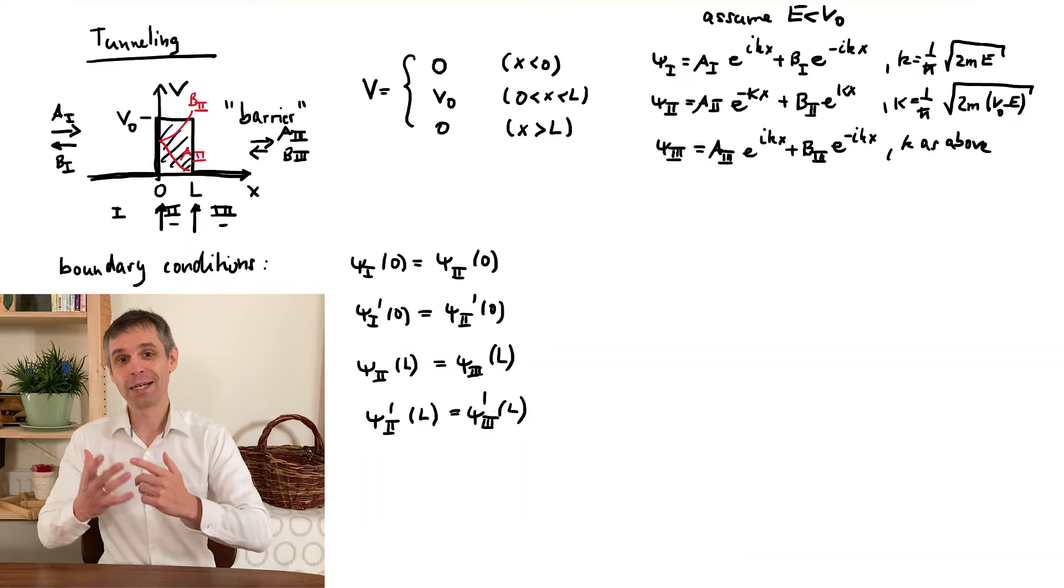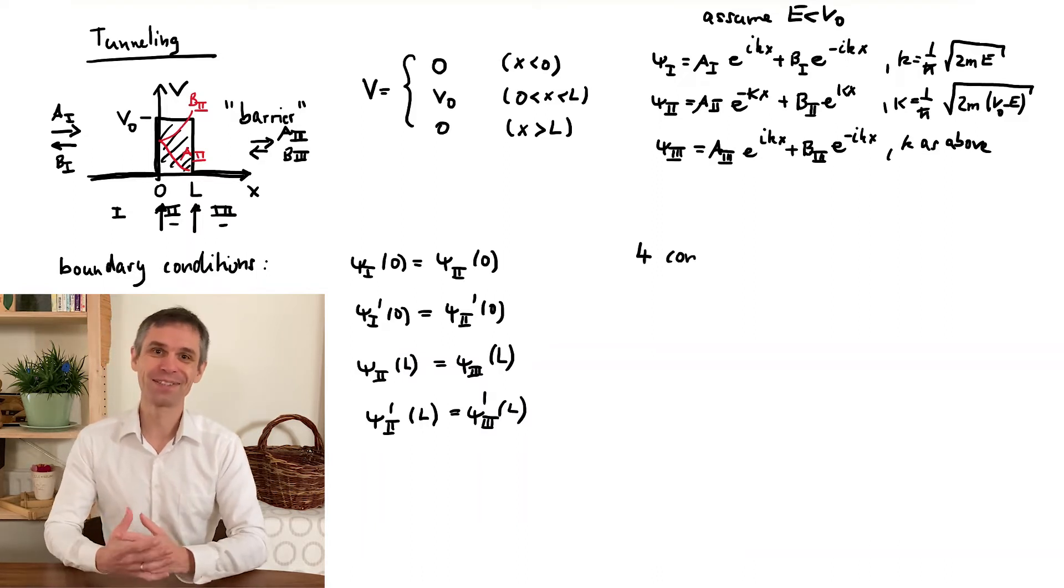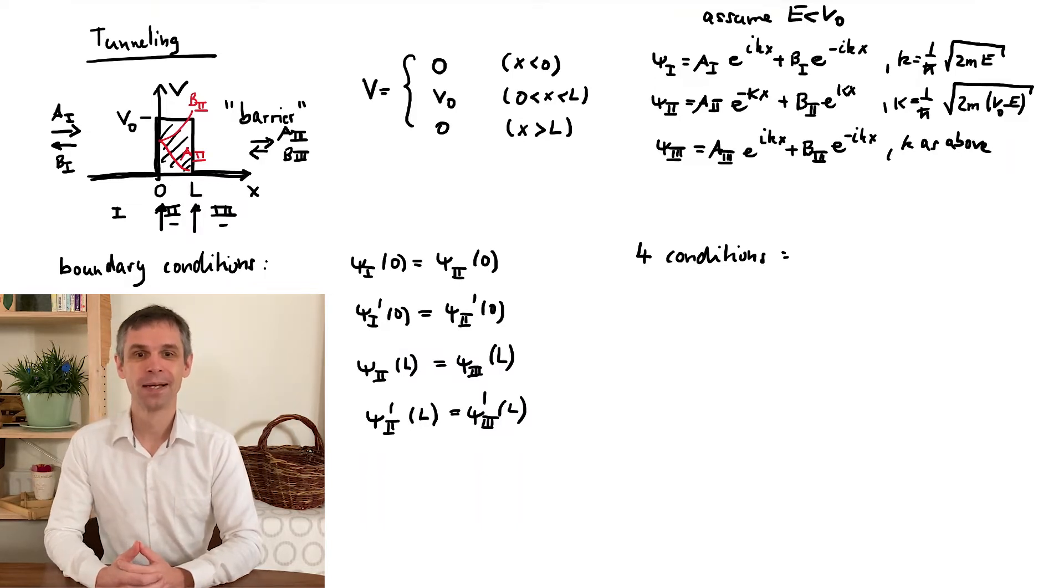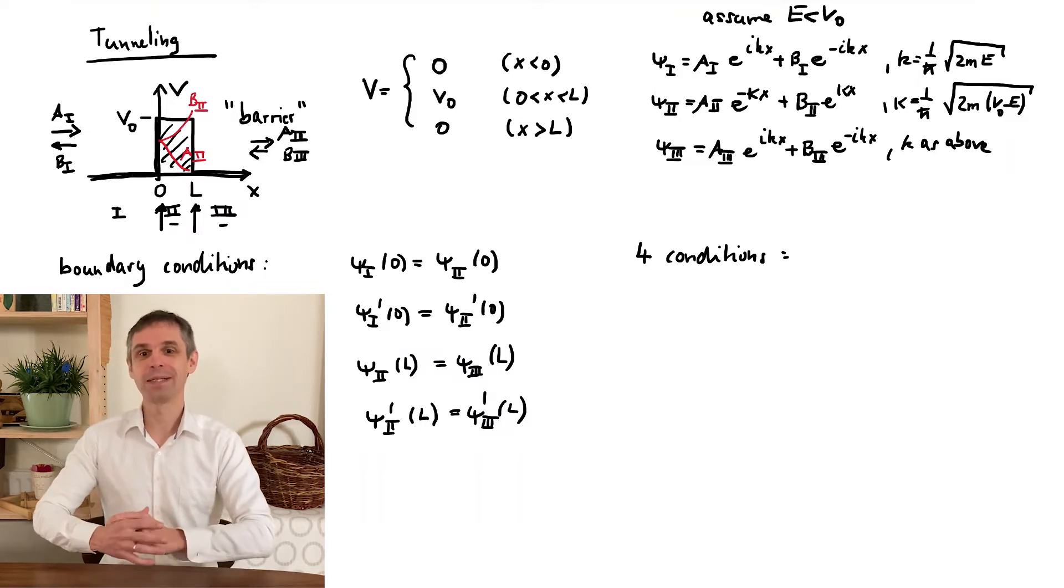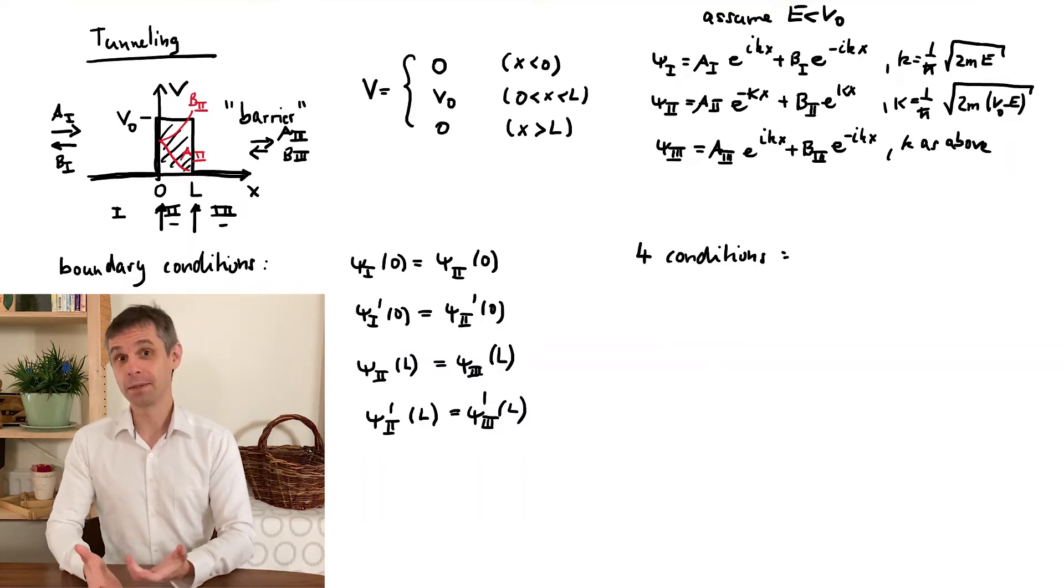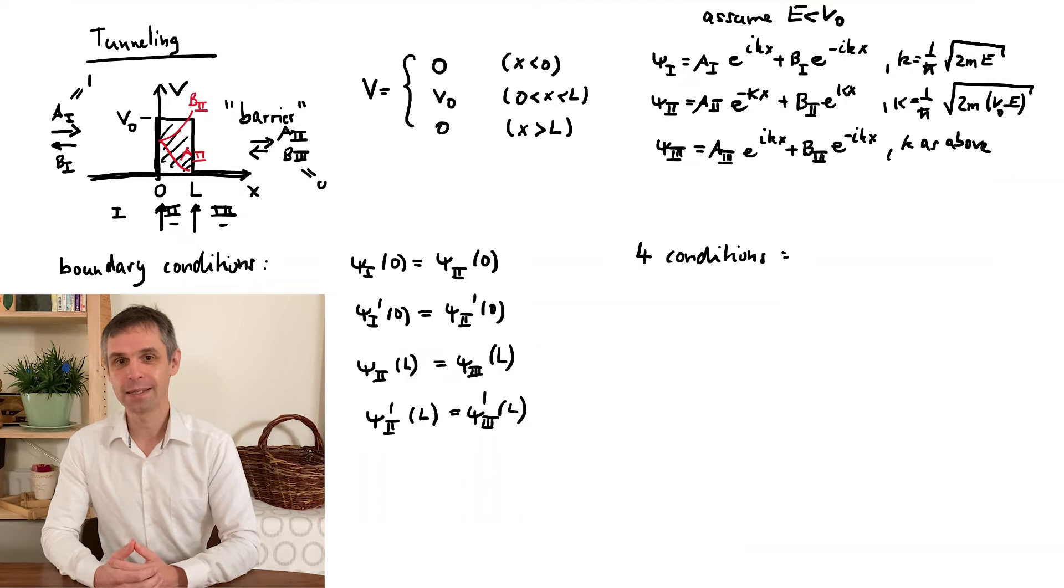Looking at this, now we have four conditions for six coefficients, which gives us quite some freedom to look at different physical situations. So to be specific, we again place our source to the very left, which means that b3 vanishes and a1 can be set to unity.